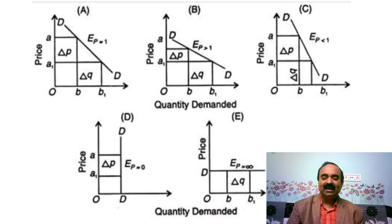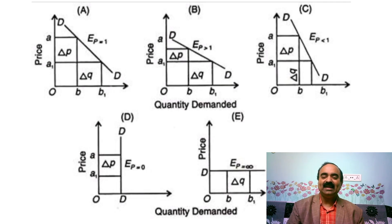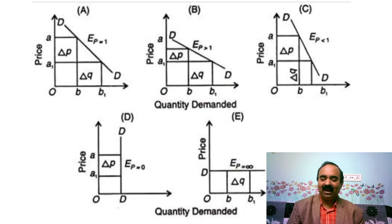5. Perfectly Elastic Demand, shown in Diagram E: Even an infinitesimally small change in price leads to an infinite change in quantity demanded. In such a situation, price elasticity of demand is said to be perfectly elastic. In this case, EP will be equal to infinity. Dear students, we learned about elasticity of demand and its different types, and price elasticity of demand and its different types. Thank you.